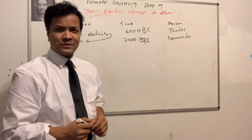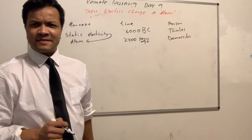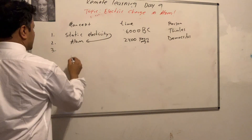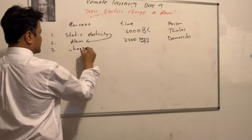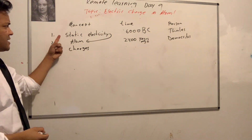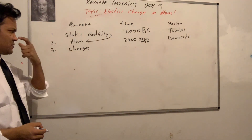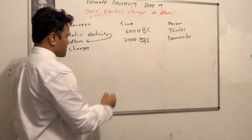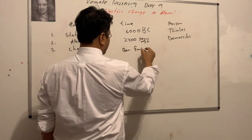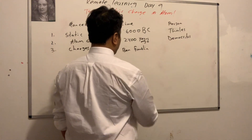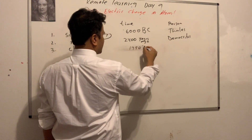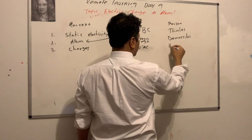Keep in mind, we are 2,400 years ago. Now I'm going to take you to 1750 — charges. So you have an understanding of static electricity, then atom, then charges. Of course, Ben Franklin, 1750.